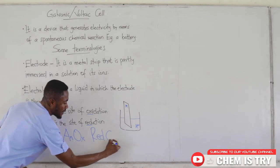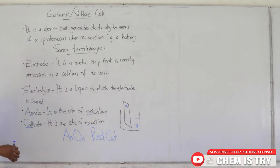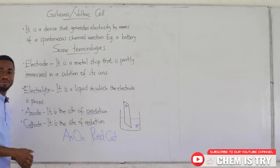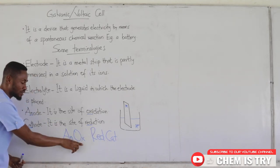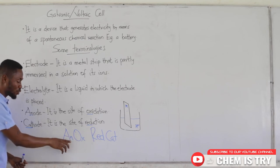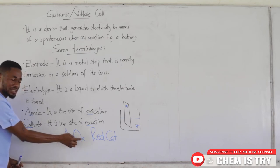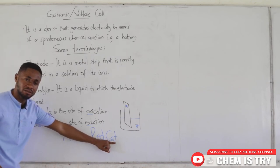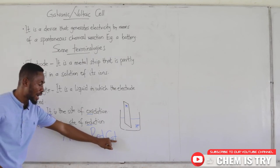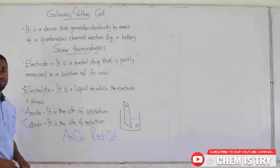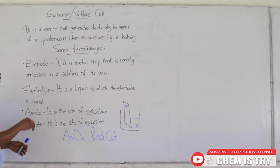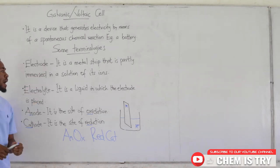There is a way we can remember this with ease. Anode — oxidation: An Ox. Red — Cat: reduction at the cathode. An Ox, Red Cat — that's the way to remember it. An ox is anode oxidation, and red cat is reduction at the cathode.